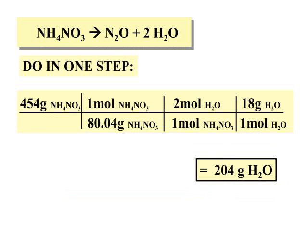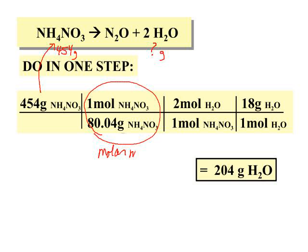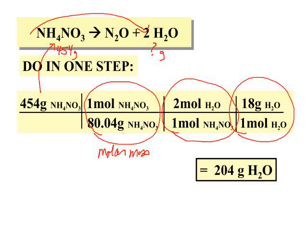Normally we would not break this down into all those steps; we would do it in one step. Starting with 454 grams of ammonium nitrate, we divide by the molar mass of ammonium nitrate to convert to moles, then use the mole ratio to convert moles of ammonium nitrate to moles of water, then multiply by the molar mass of water to convert back to grams — giving us 204 grams of water. Notice grams of ammonium nitrate cancel, moles of ammonium nitrate cancel, and moles of water cancel, leaving us with our final unit of grams of water — our theoretical yield.